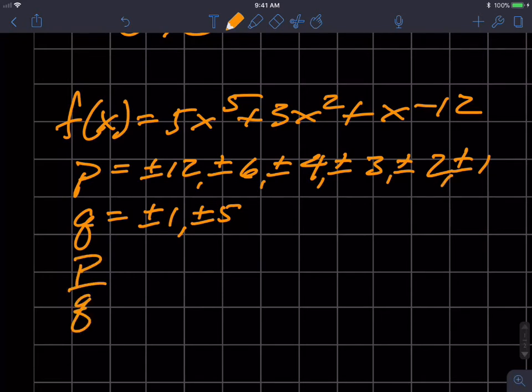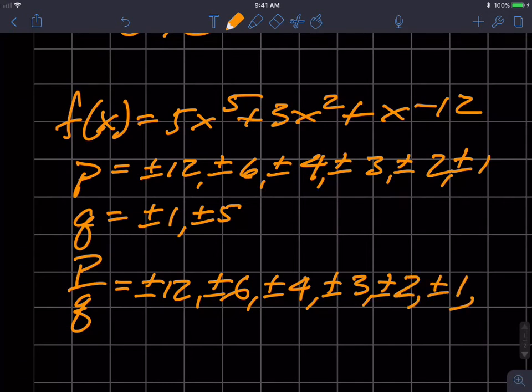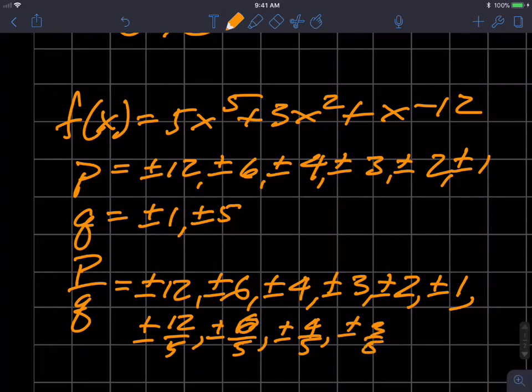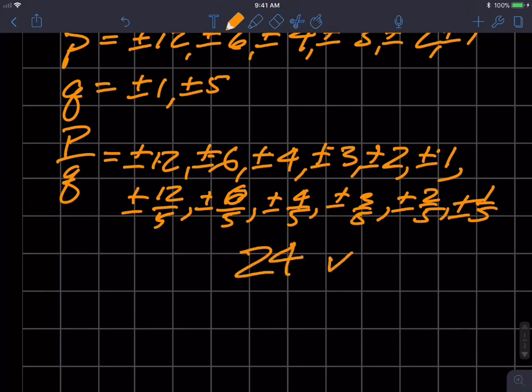Okay, so now my p's over q's, my possible rational roots, are going to be plus or minus 12, plus or minus 6, plus or minus 4, plus or minus 3, plus or minus 2, and plus or minus 1. So we got 1, 2, 3, 4, 5, 6 times 4 is 24. 24 values that I have to test to see if they're zeros of this polynomial function.